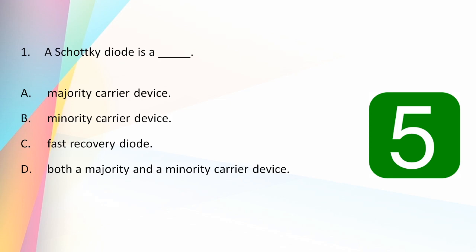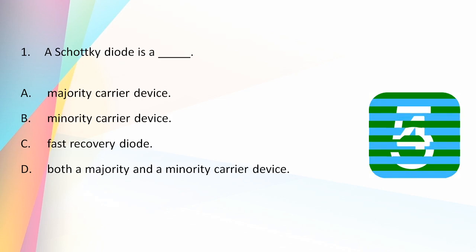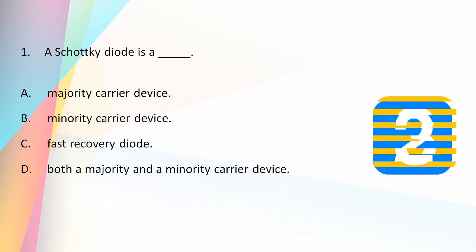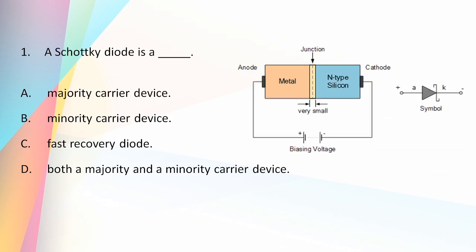Schottky diode is a majority carrier device. Schottky diode is formed by joining a semiconductor region, usually N-type, with a metal such as gold, silver, or platinum. So it is a metal-to-semiconductor junction having only the majority carriers. It is also used for high frequency switching applications, generally above 20 gigahertz.